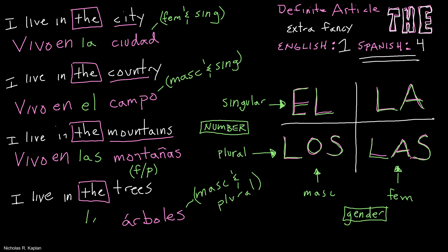How did I know that? Because we've already studied nouns. We're not focused on nouns on this one, just the definite articles — el, la, los, and las. Always look at the number and gender: masculino, feminino, singular, plural — of the noun.